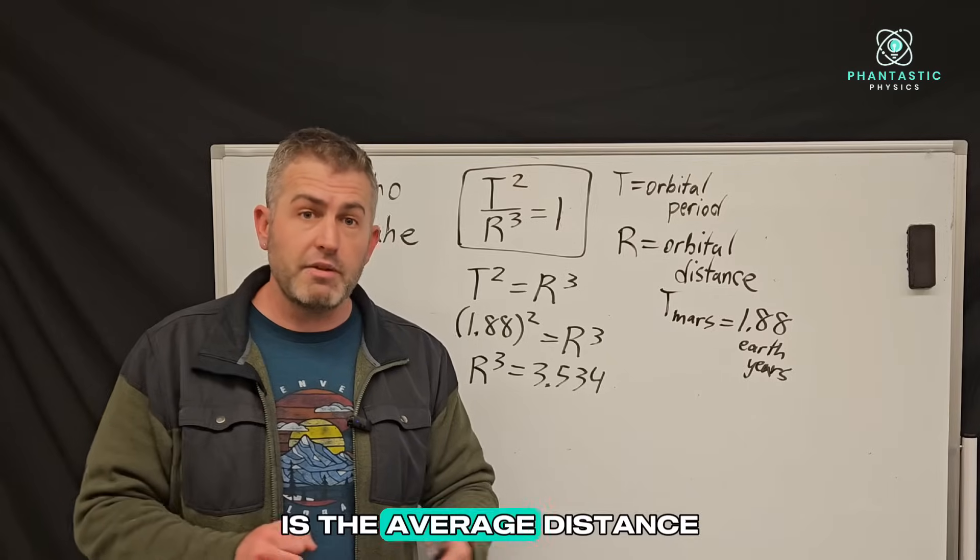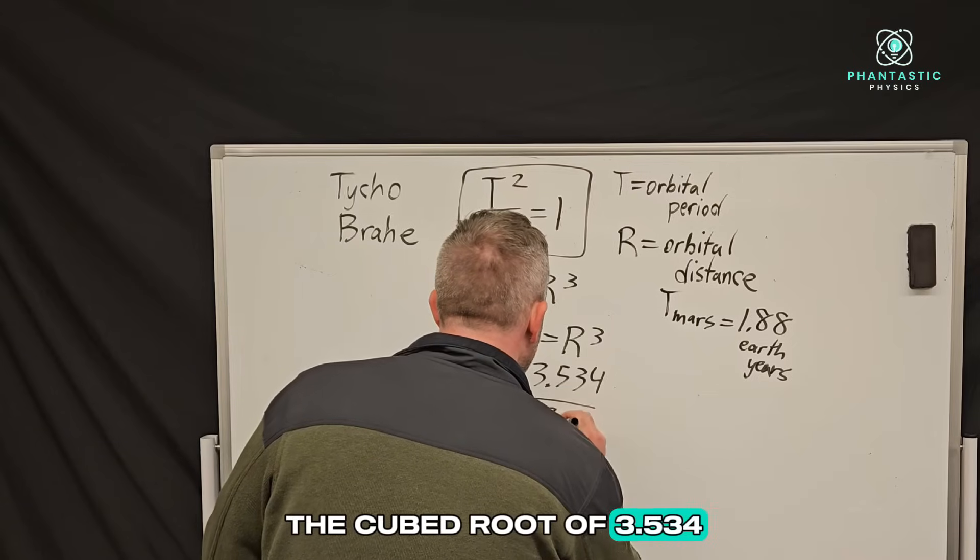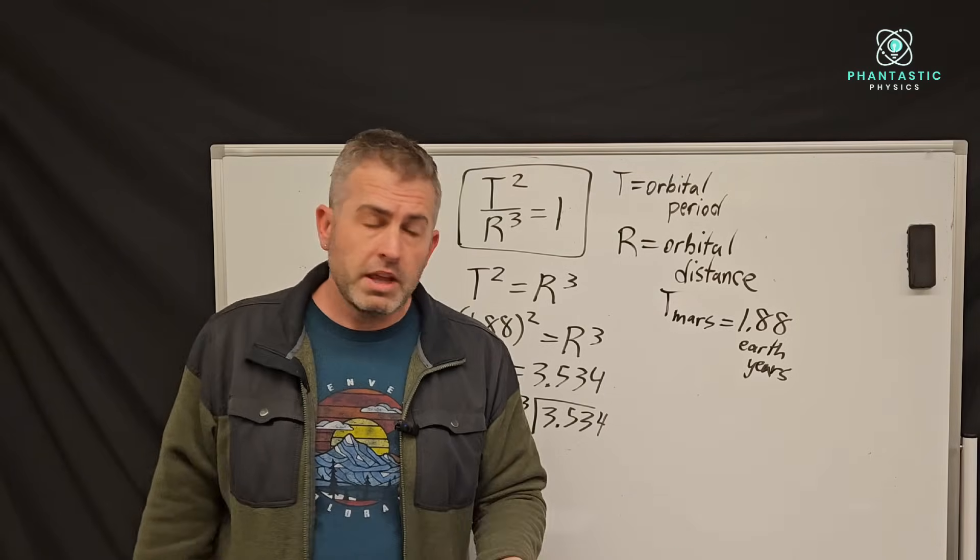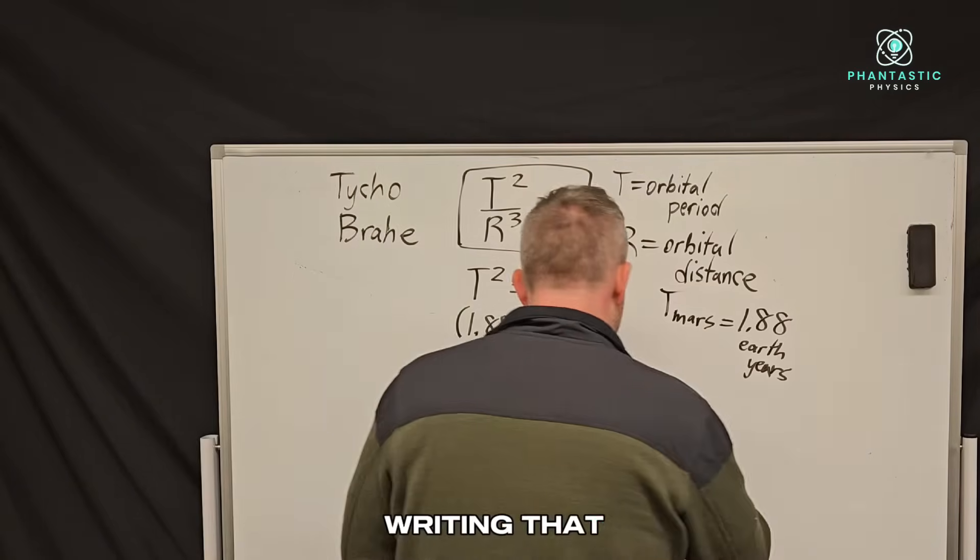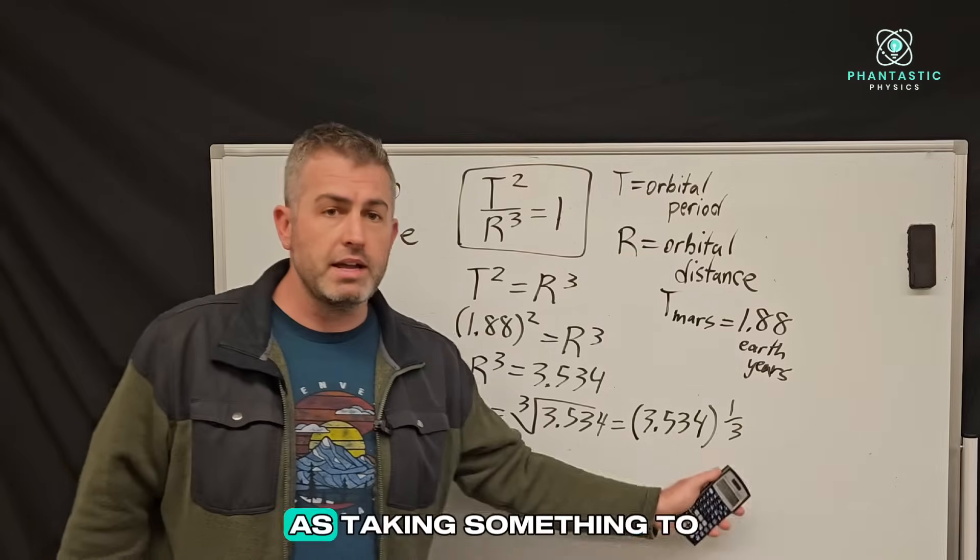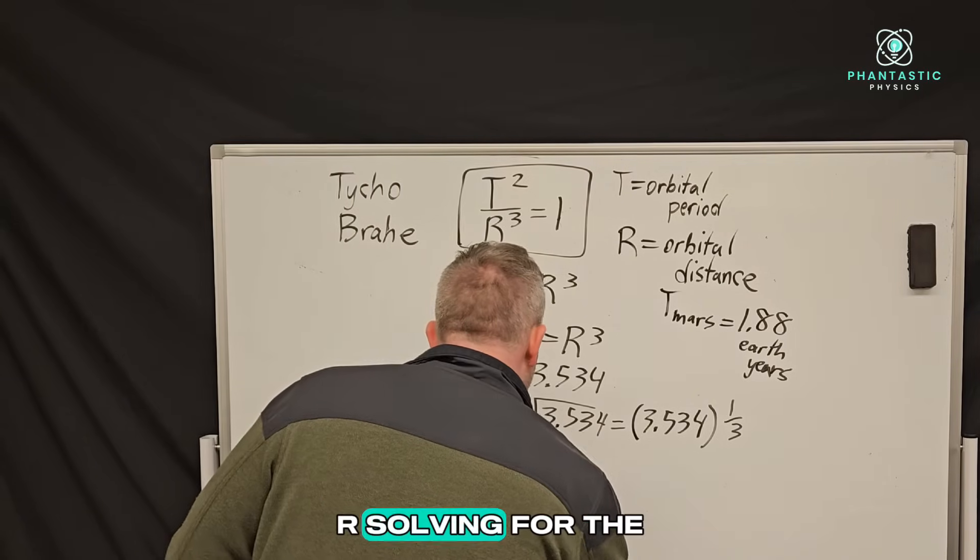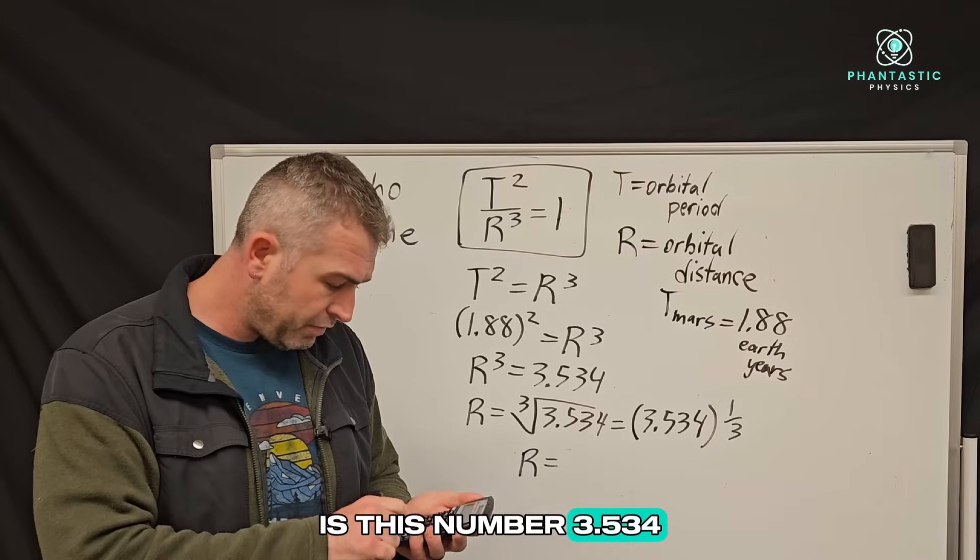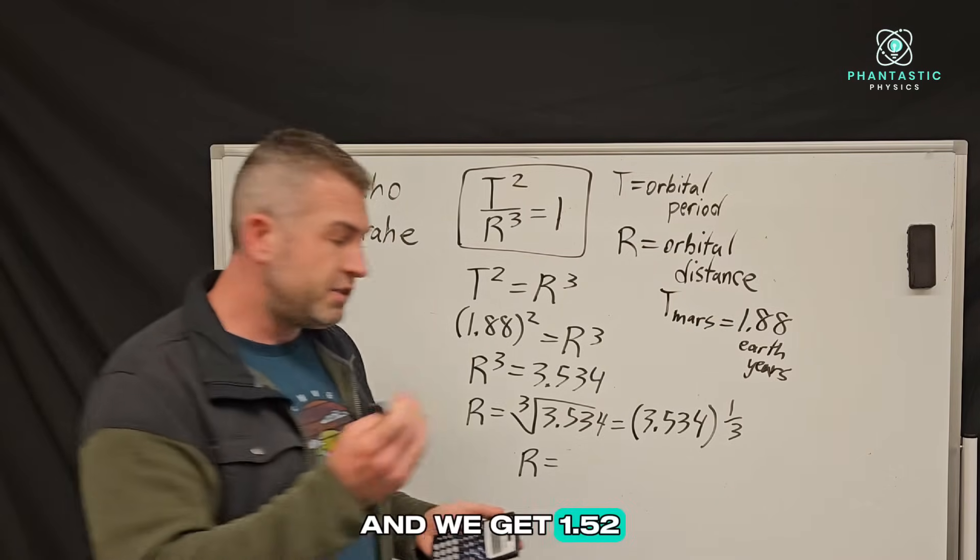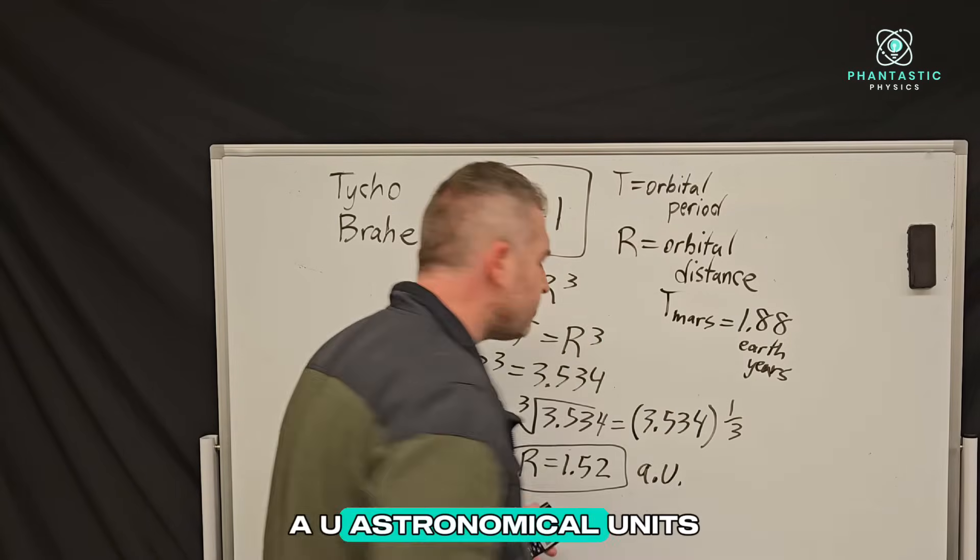I just swapped the side. So we have R cubed is equal to this number here. And so to solve for R, which remember is the average distance from the sun to Mars, I can say that R is equal to the cubed root of 3.534. So I'm sure you're familiar with the square root. This is similar, but we're doing a cubed root. And if you don't know how to do this, there's another way of writing that. We could say this is 3.534 to the one third power. So a cubed root is the same as taking something to the one third power. And that's something we can very easily do in most calculators. So R solving for the distance from the sun to Mars is this number 3.534 to the one third power. And we get 1.52. R equals 1.52.